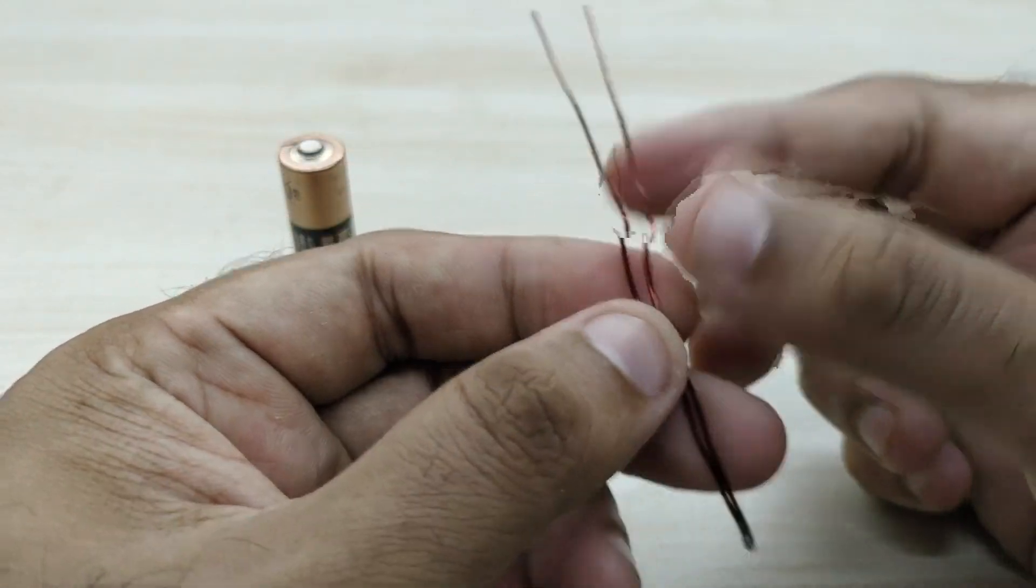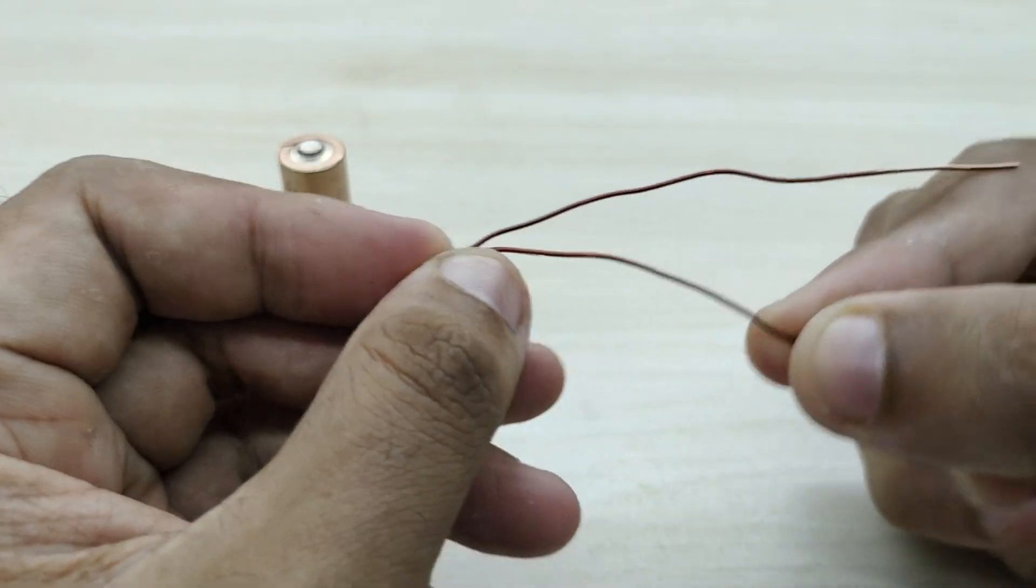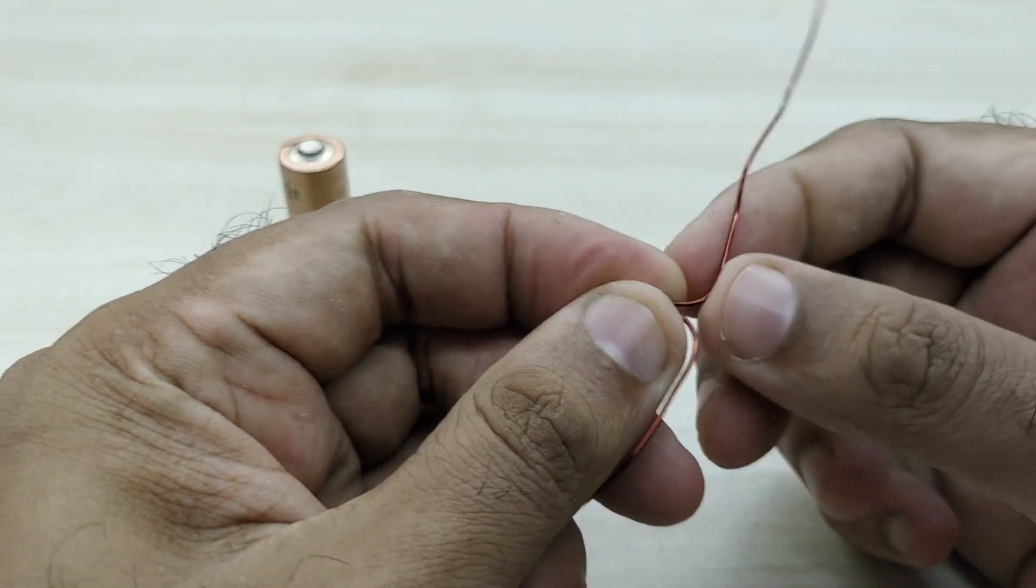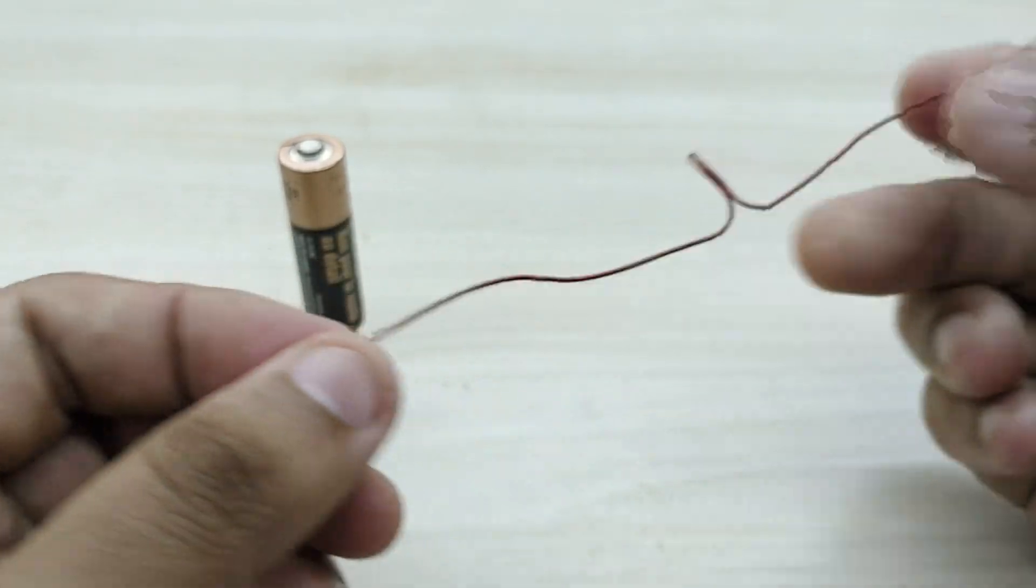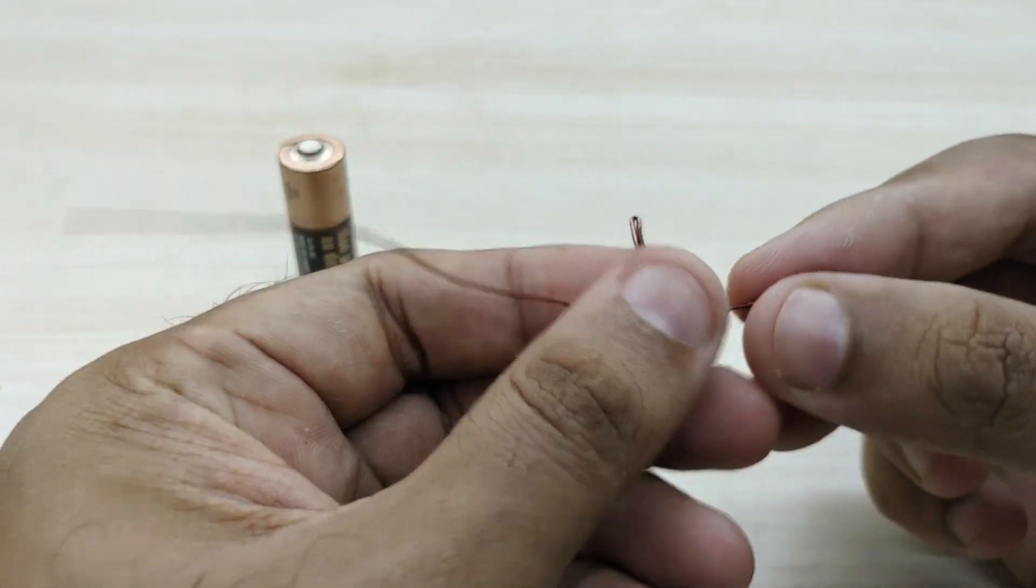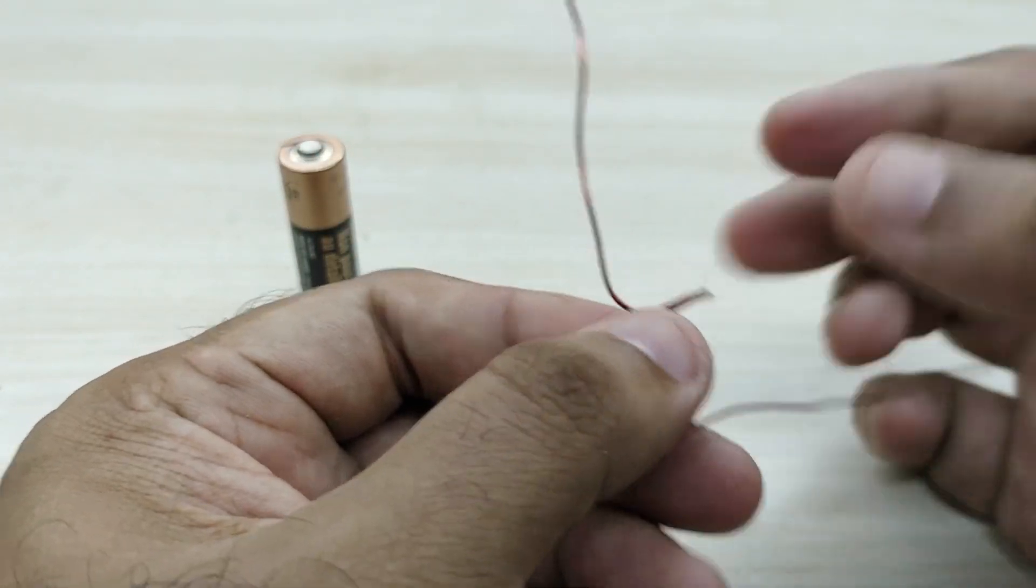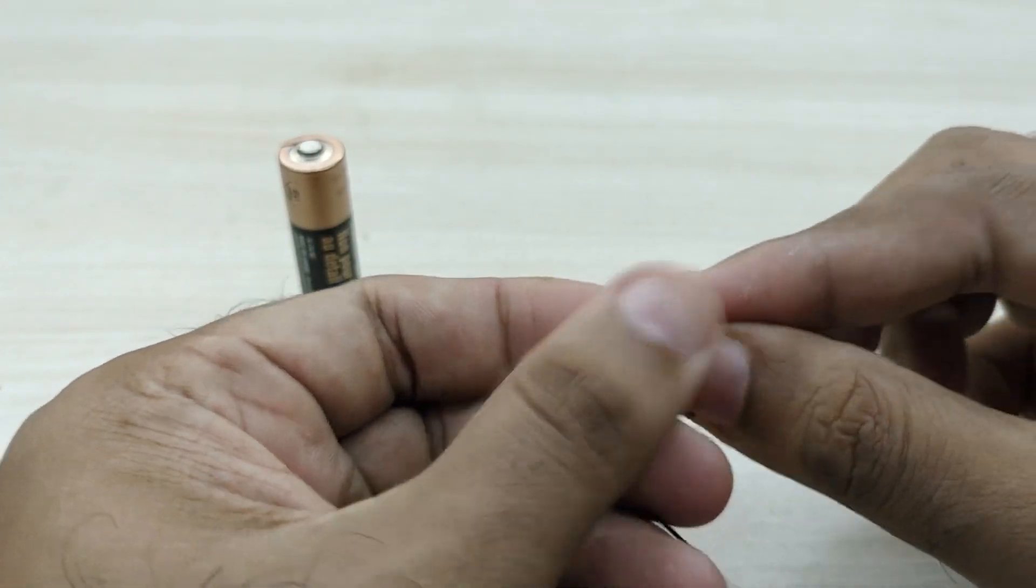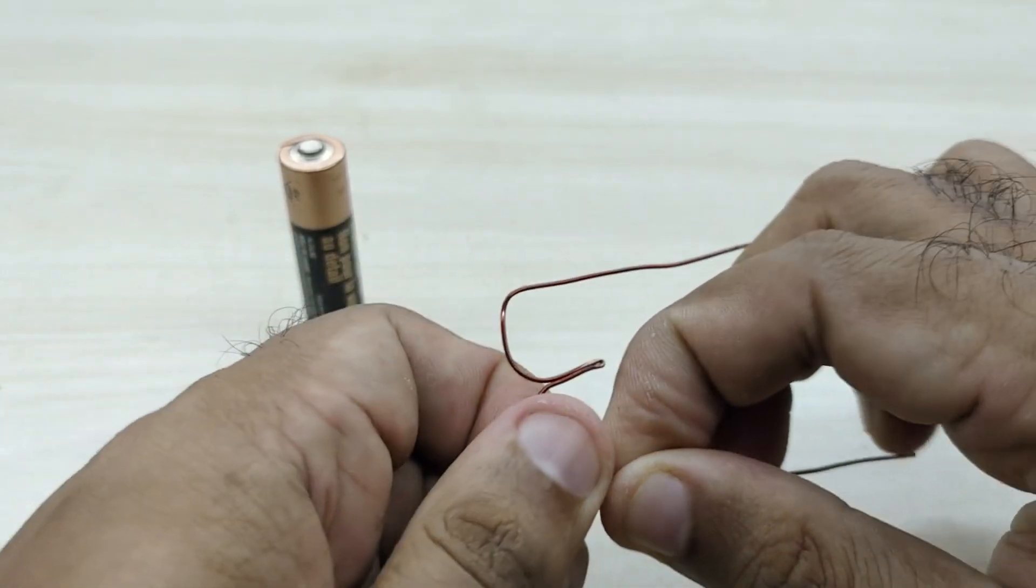Now watch closely how to make the coil. Leave 1 cm from the middle point of the copper wire and bend 90 degrees on both sides as shown. Now again leave 1 cm and bend both sides of the copper wire 90 degrees as shown.